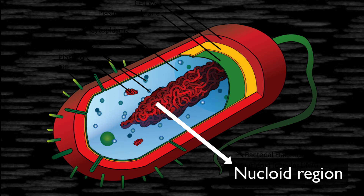The nucleoid is not membrane-bounded — it is just the portion of the cytoplasm where the genetic material stays, unlike the nucleus which is membrane-bounded. Furthermore, the genetic material of prokaryotes is never associated with histone proteins, and hence there are no true chromosomes. Since DNA in eukaryotes is organized with histone proteins to form true chromosomes, prokaryotes — lacking histones — do not have true chromosomes.